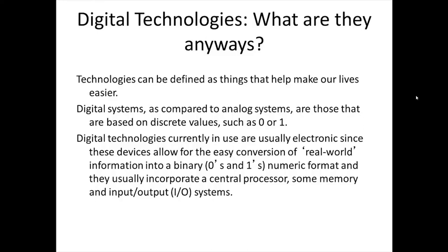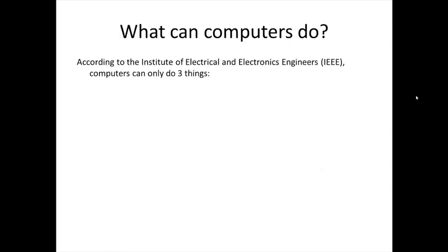Digital technologies do not have to be electronic; however, for all intents and purposes most are, as electronics allows for the easy conversion of real-world information into a binary zeros-and-ones numeric format. In order to convert real-world information into digital format, processing is required and combined with memory of some kind, so that pre-processed and post-processed information can be stored. This is the basis of central processing units in modern computers. While there have been examples of mechanical non-digital computers such as the Charles Babbage Analytic Engine or a slide rule, in this course we will attend strictly to the digital side.